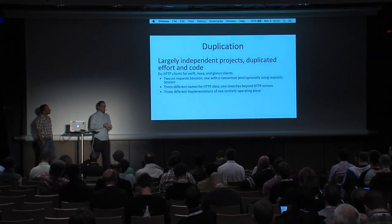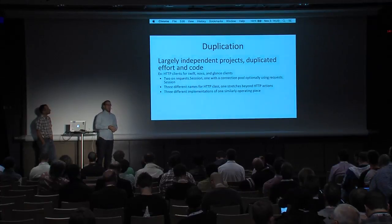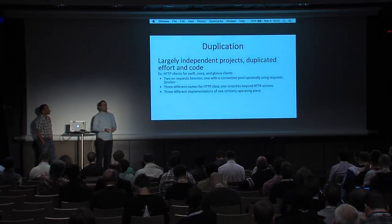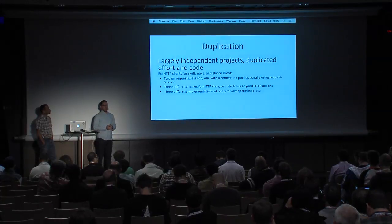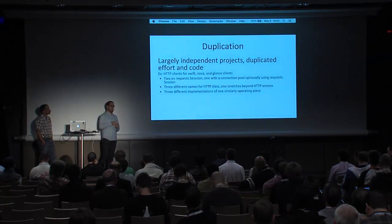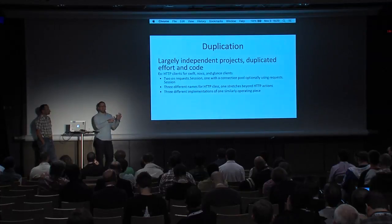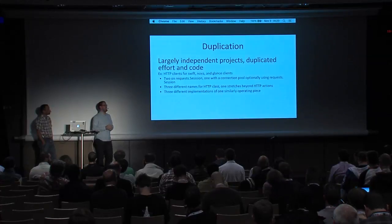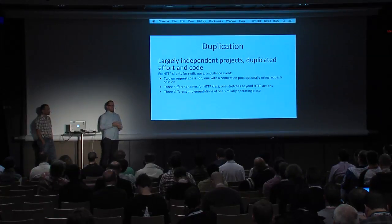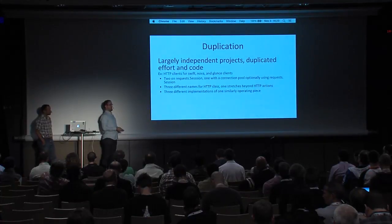Some of that fragmentation has led to a lot of duplication. Looking into a lot of the client implementations or any of the tools, you see one common thread: everyone has mostly written their own HTTP client. A lot of them you can tell are copy and pasted. Some of the more recent projects have inherited — not actually in the OO sense — the HTTP class from someone else. A lot of them come from Swift or Nova.